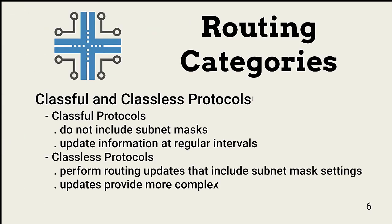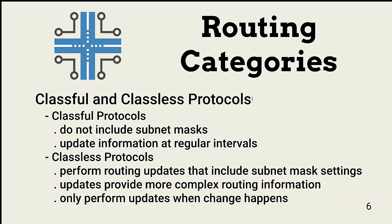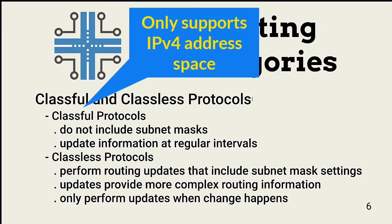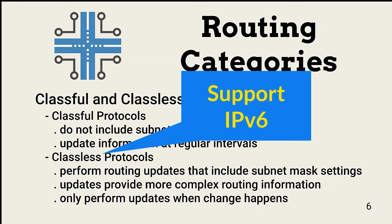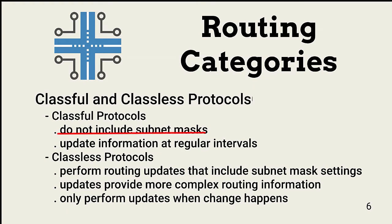The final categories are classful and classless protocols. Classful protocols exchange routing data and divide the IPv4 space into five address spaces — A, B, C, and D. The move to classless addressing has relegated classful protocols to the IPv4 compatibility space, and classful protocol topology updates do not include subnet masks. Classless interdomain routing, or CIDR, is commonly used today. CIDR was created to slow the growth of routing tables and slow IPv4 address space exhaustion. Classless routing protocols support IPv6 and send subnet masks as part of topology updates.